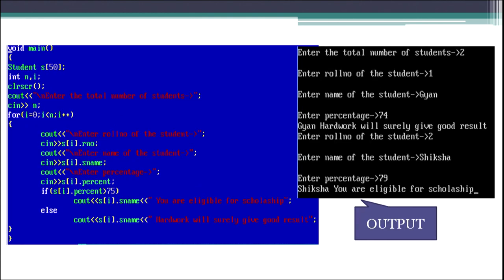Next we have a program to display whether a child is eligible for a scholarship if they score more than 75. When using a condition, we access the member using structure name dot member name. For more than one student, we declare a structure variable s as an array that will hold data of 50 students. To access this array we use a loop, starting from 0, and through the cin statement we write structure_variable[i].member_name, where the square bracket i indicates the index of that particular element.